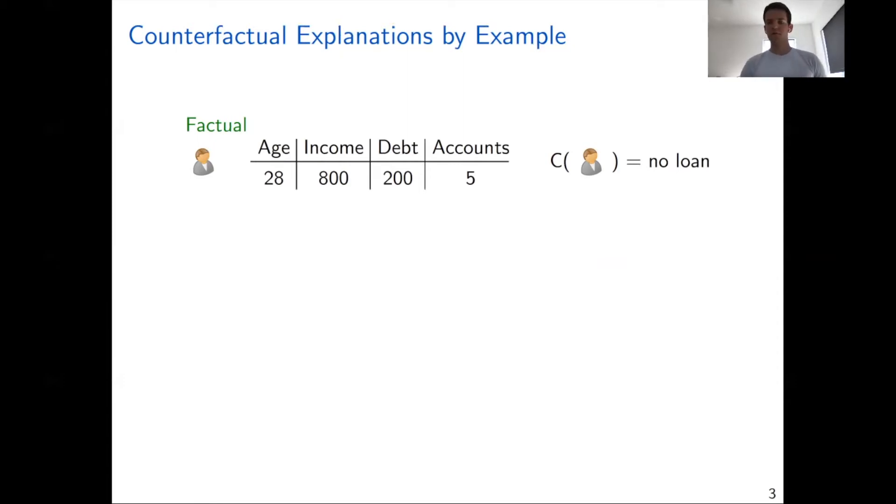The classifier returns that the loan should be rejected. A counterfactual to this customer is another customer profile that is very similar to the original profile, but for which the loan is approved. So here we change income and accounts, and then the loan is approved. This counterfactual does not have to come from a predefined data set, but it could really be any customer profile, real or imaginary.